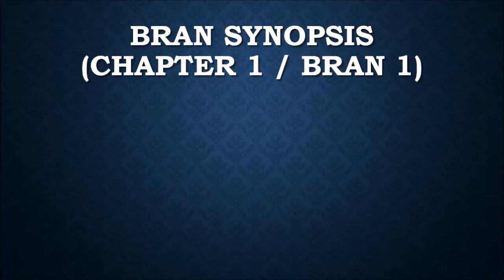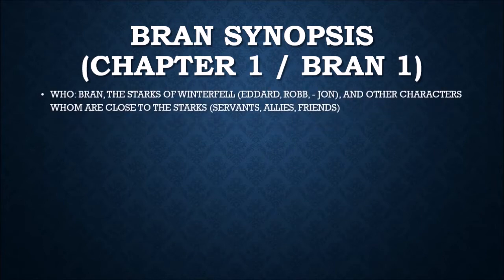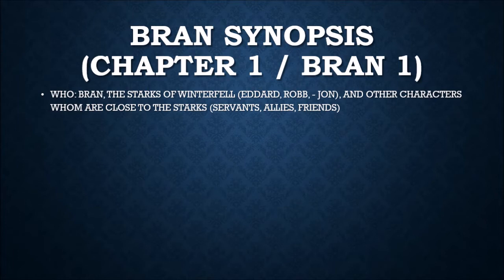We have the synopsis of the very first chapter of the book, which is a Bran viewpoint chapter. I like to break my synopsis down into the who, what, when, where, why, and how. For who, we have the Starks of Winterfell. Bran is our viewpoint character — everything we learn, we learn through what Bran experiences and knows. We also have Eddard, the father of House Stark, Robb the eldest son, and Jon, who is Eddard's bastard son, plus servants, allies, and friends.